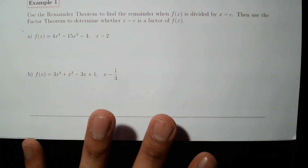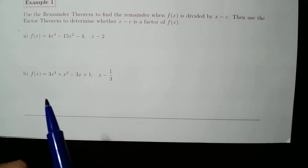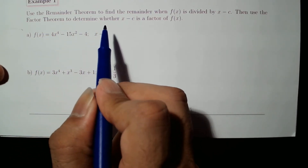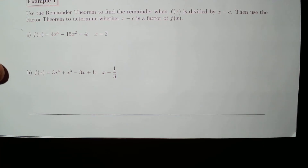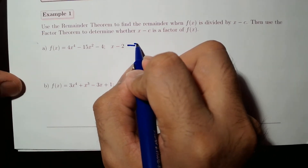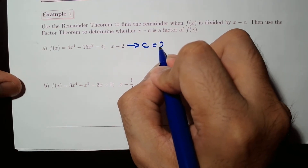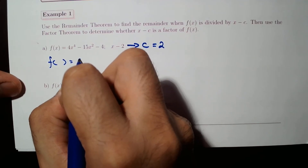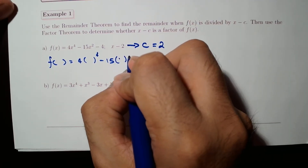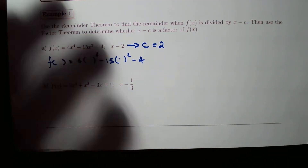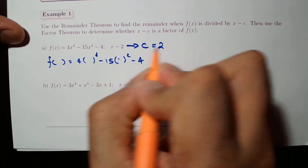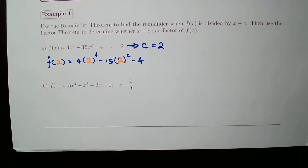Let's apply these two theorems to a couple of exercises. Use the remainder theorem to find the remainder when f of x is divided by x minus c, then use the factor theorem to determine whether x minus c is a factor of f of x. We don't have to do the long division. Since x minus 2 is given, c equals 2, so we evaluate the given function at c equals 2.